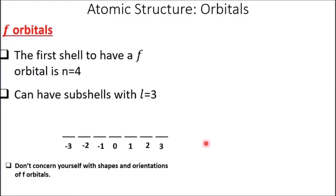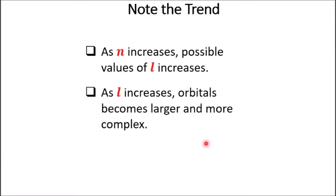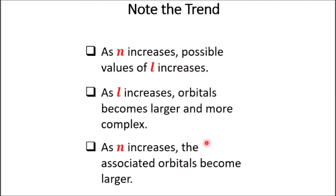Note the trends: as n increases, possible values of L increase; as L increases, orbitals become larger and more complex; as n increases, the associated orbitals become larger. The S orbital is generally smaller than the P orbital, but the 1s orbital is smaller than the 2s orbital — that is, the same type of orbital gets larger with increasing n. For example, the 2p orbital is smaller than the 3p orbital, etc.